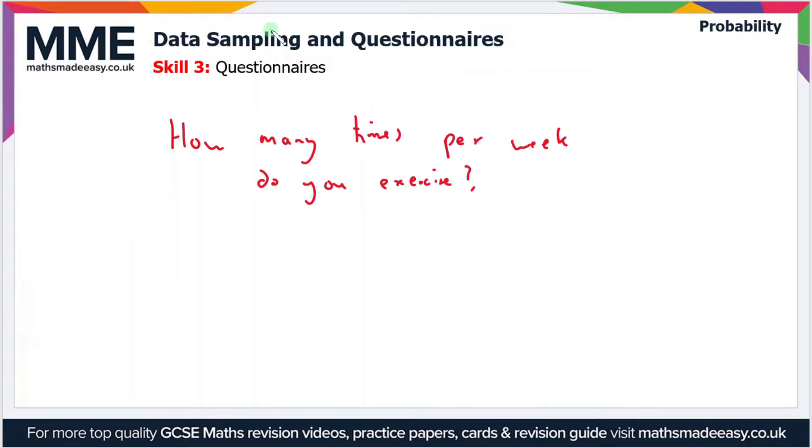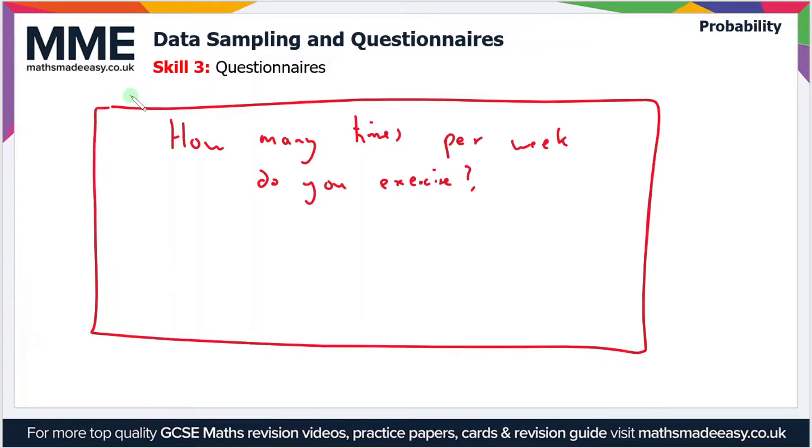This forms the question part of our questionnaire. Now we need some response boxes, and it's important that you have a good amount of response boxes. You don't just want one or two, because if we had the response boxes as 'I don't exercise' or 'I exercise more than once,' you're not really getting any useful information from the questionnaire. So let's add five response boxes.